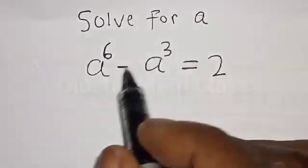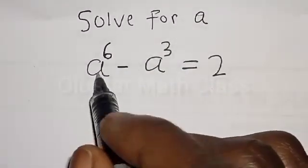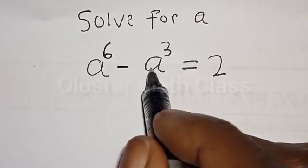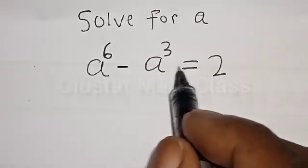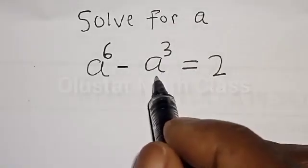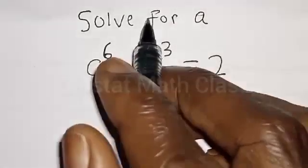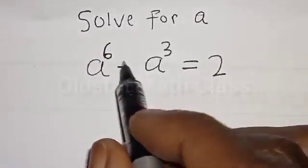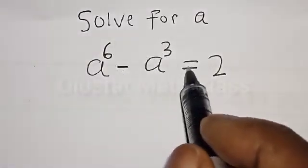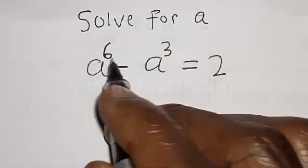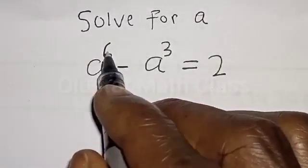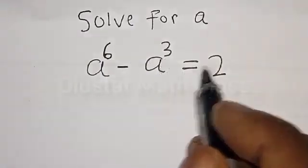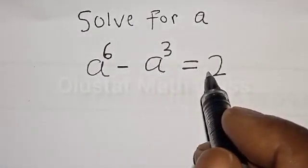Solve for A. A raised to power 6 minus A raised to power 3 is equal to 2. Welcome to my class. In this class, we want to find the value of A from this given equation: A raised to power 6 minus A raised to power 3 is equal to 2.